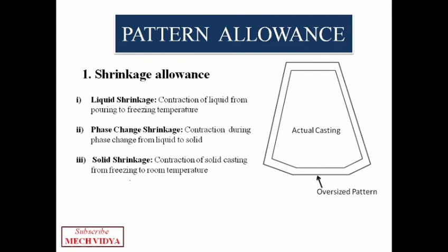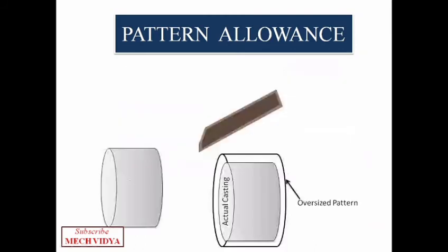So the first two shrinkages can be overcome with the help of risers in gating system, which we will discuss in the next lecture, while for the last shrinkage the pattern allowances are provided. Now the second reason why we need oversized pattern is to provide machining allowance.